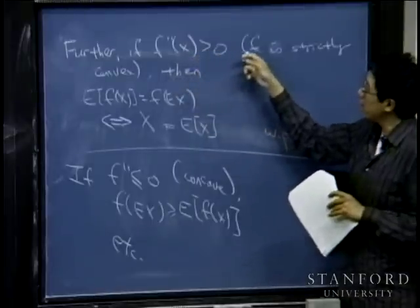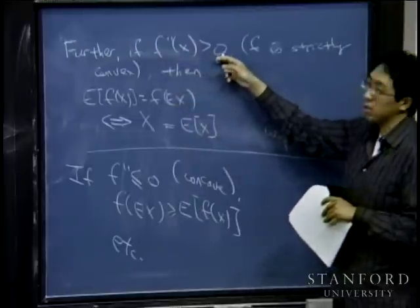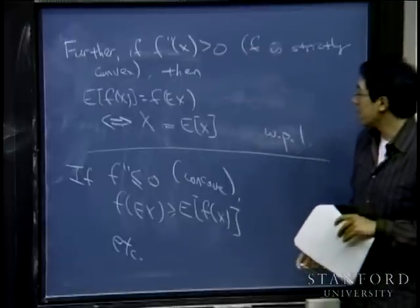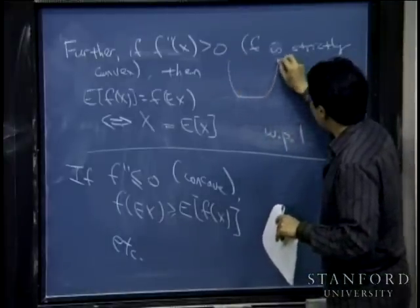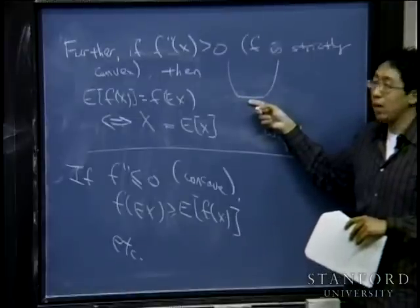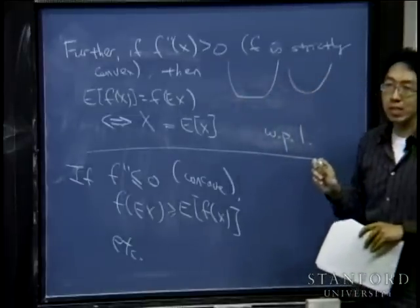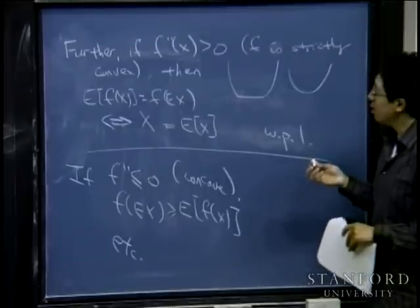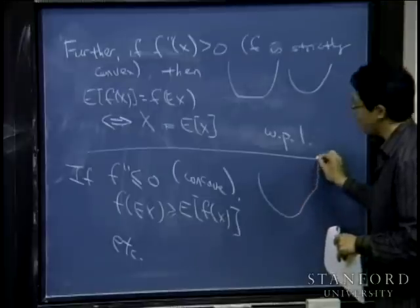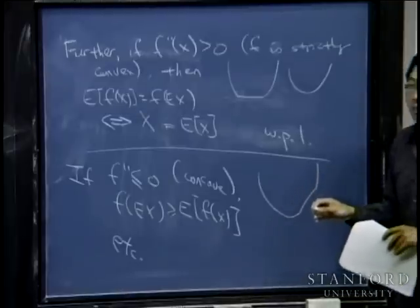If f'' is strictly greater than zero, that is my definition for strictly convex. For example, a function with a straight-line portion is convex but not strictly convex — f'' equals zero in that portion. A quadratic function would be strictly convex. Informally, strictly convex means there are no straight-line portions.